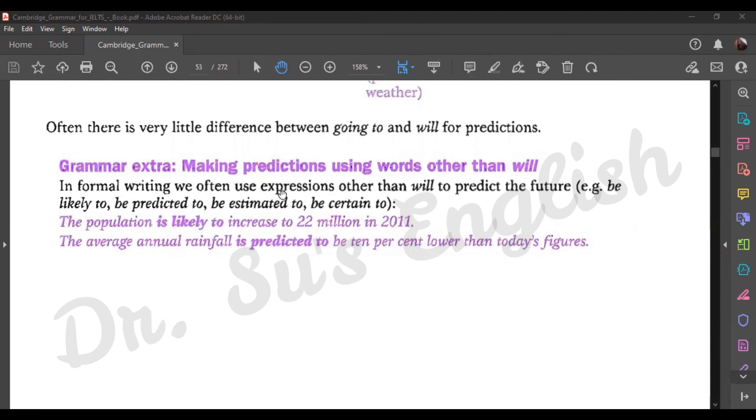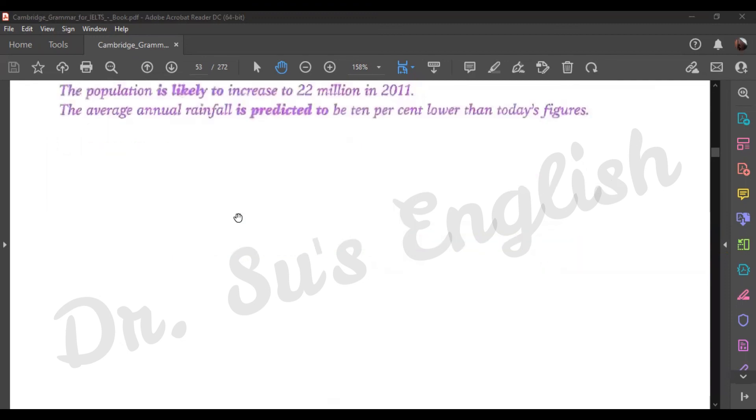Because it's a little too academic, maybe better for IELTS. 'Is likely to,' 'is predicted to' - maybe you've seen this in IELTS writing. It's likely to increase, it's predicted to increase. You don't really need to use this in everyday language.